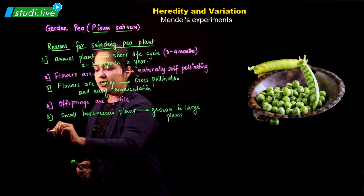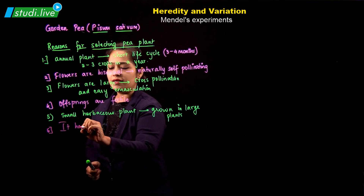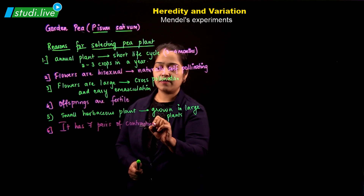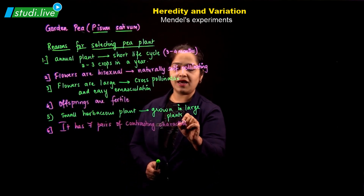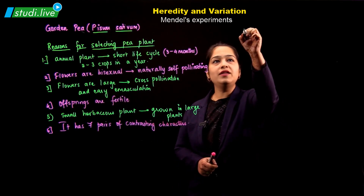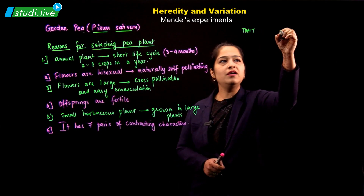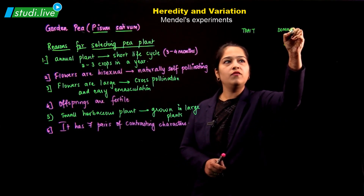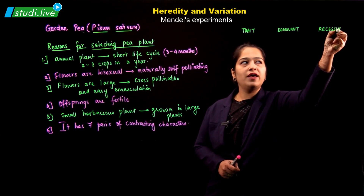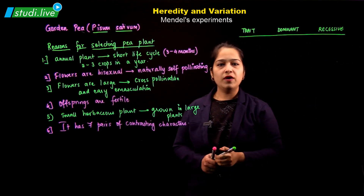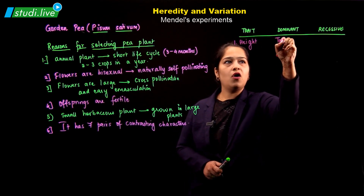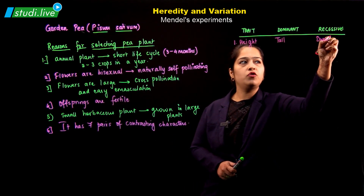The last point is that Garden Pea has seven pairs of contrasting characters. In the table we see the trait (the character), the dominant character — which gets expressed in the first generation — and the recessive character, which gets hidden in the first generation. The first trait is height, which can be tall or dwarf.